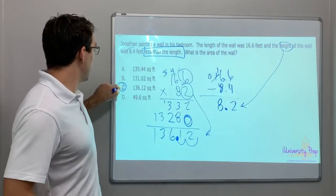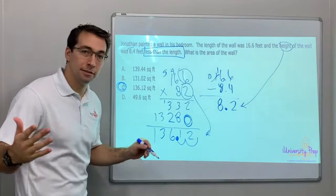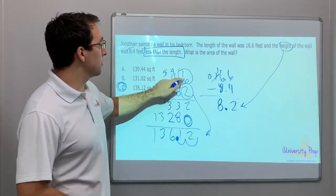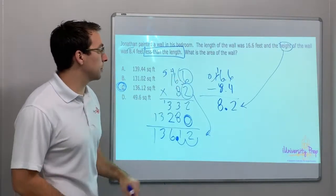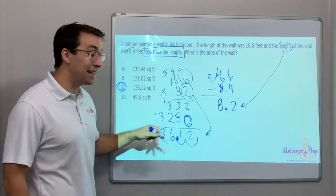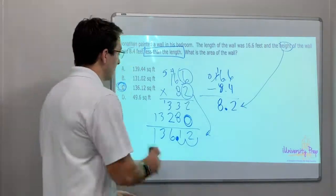How many decimal places do we have in the problem? Two. So one, two — here's our decimal. The answer is 136.12 square feet. You have to count your decimal places in a multiplication problem, and your product is going to have that same number of decimal places.